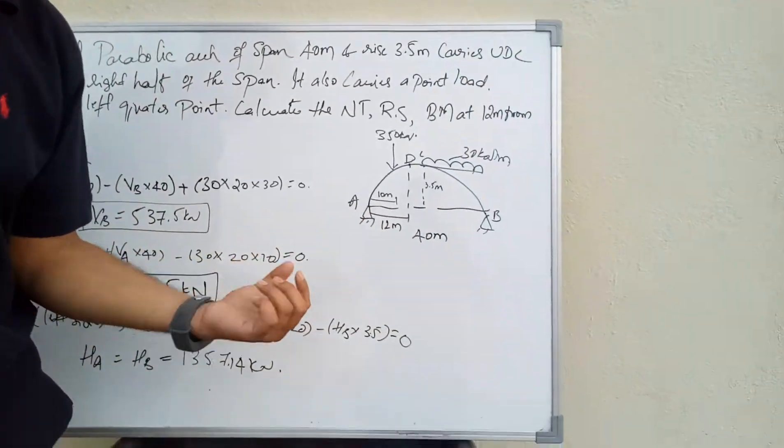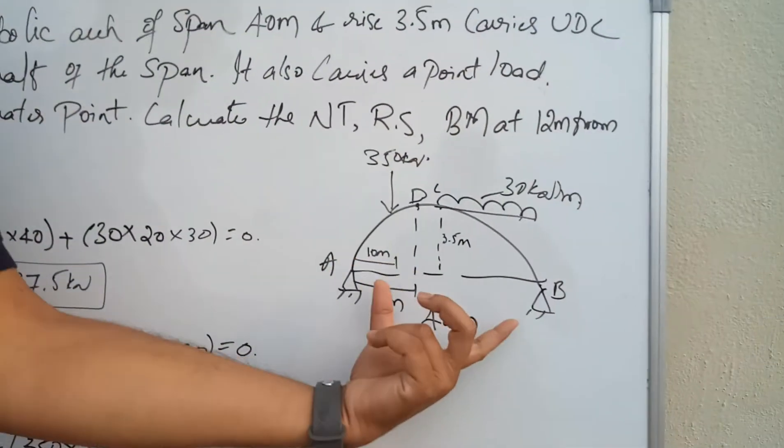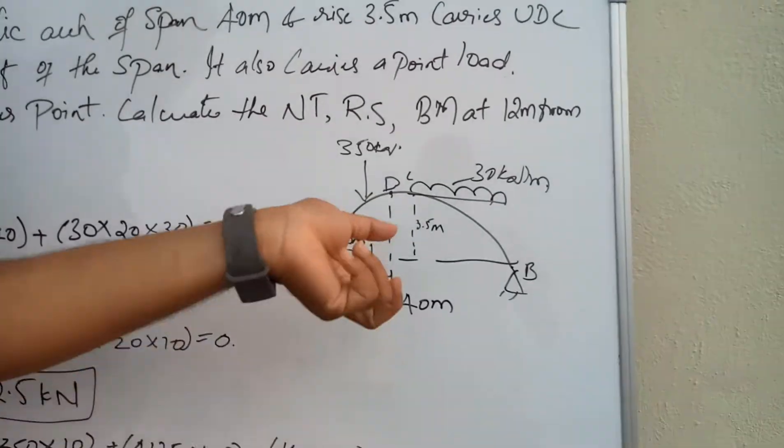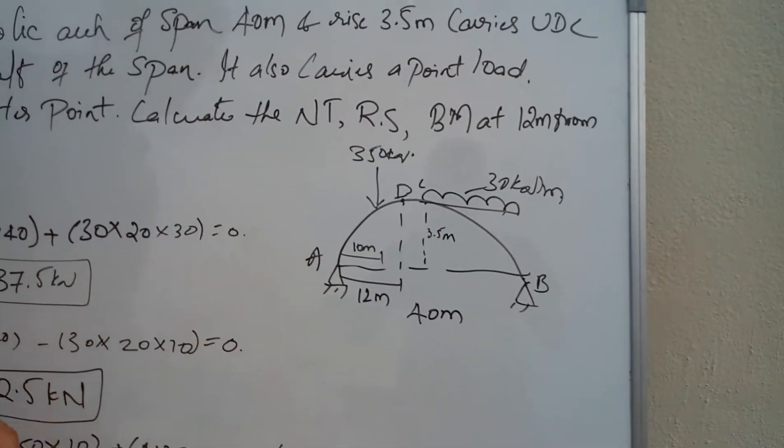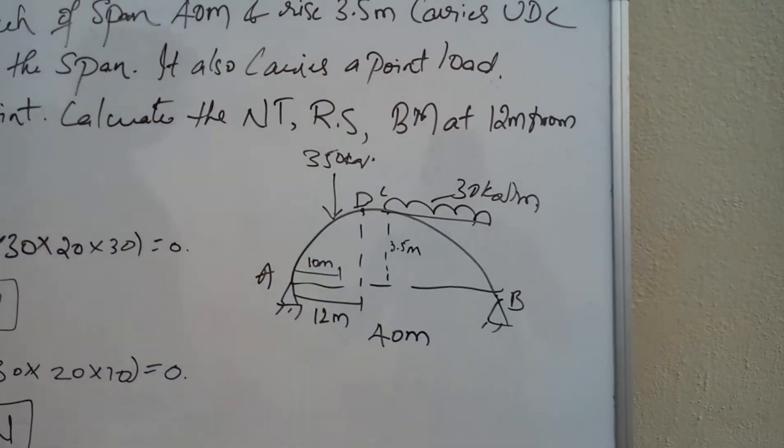Here there is a three-hinged arch ABC. The total span is 40 meters and the rise is 3.5 meters. The right half completely carries a UDL of 30 kilonewtons per meter.